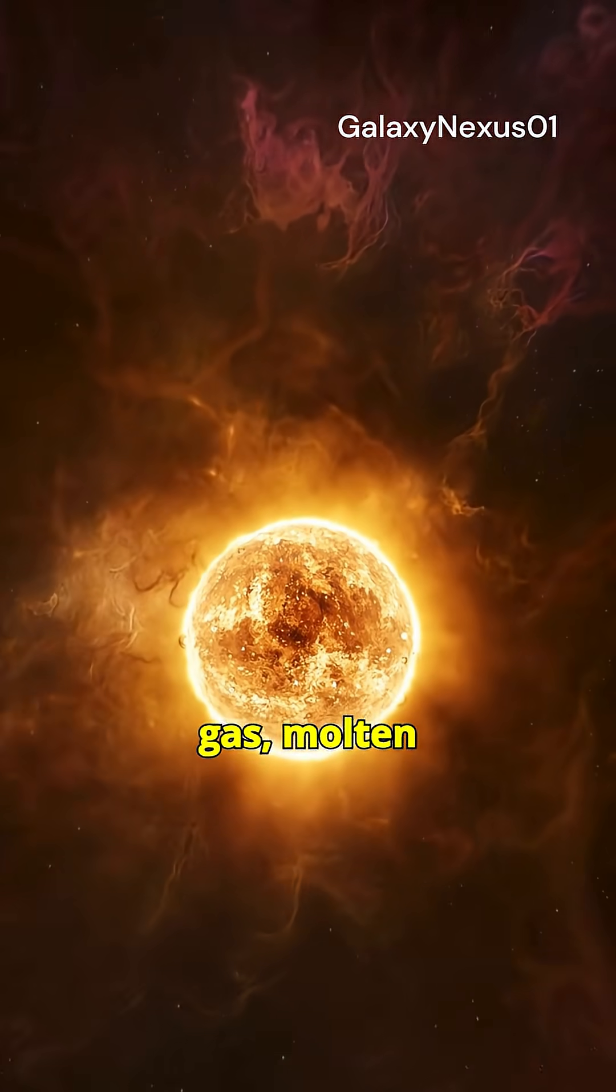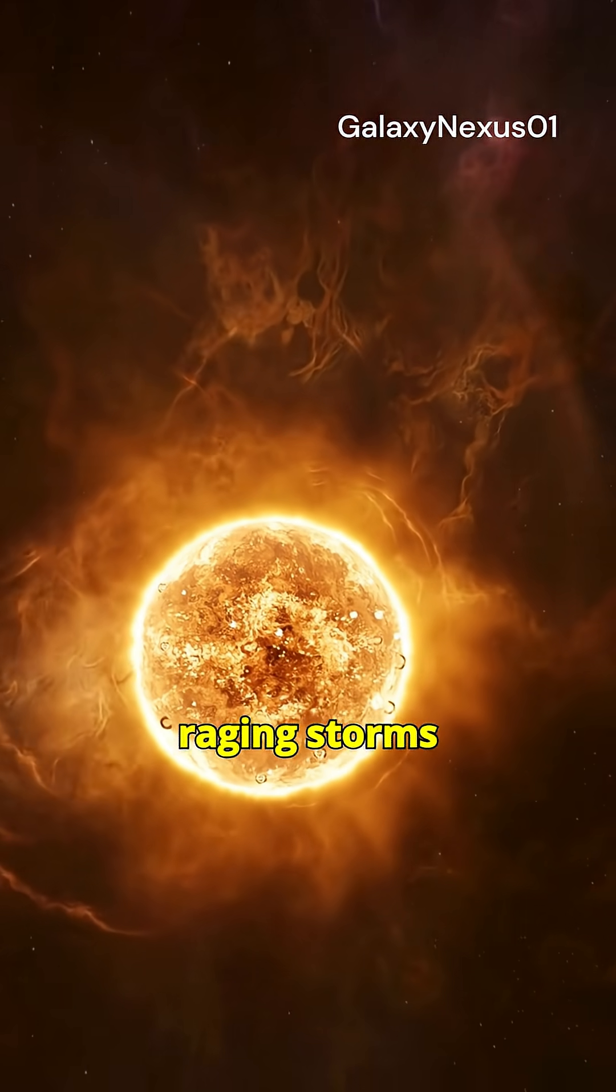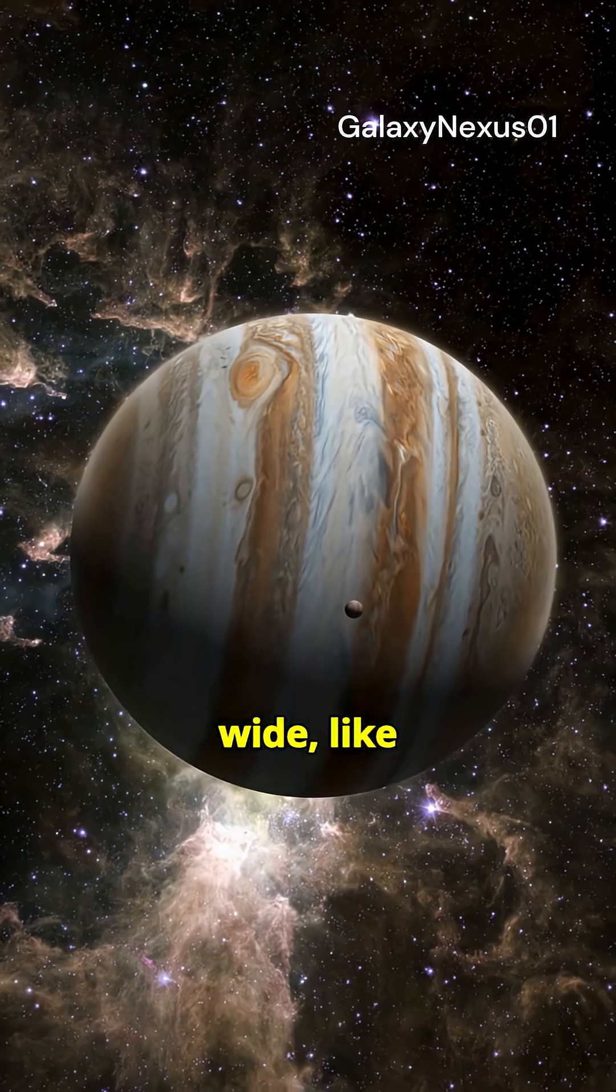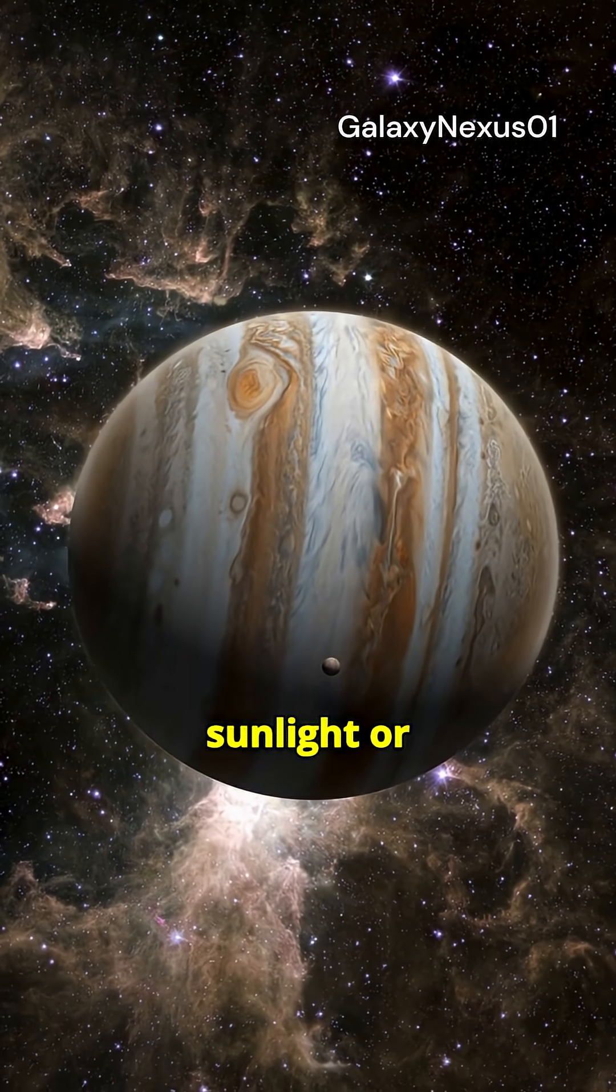Its atmosphere is made of hot gas, molten clouds, and raging storms that stretch thousands of kilometers wide, like Jupiter, but without any sunlight or stability.